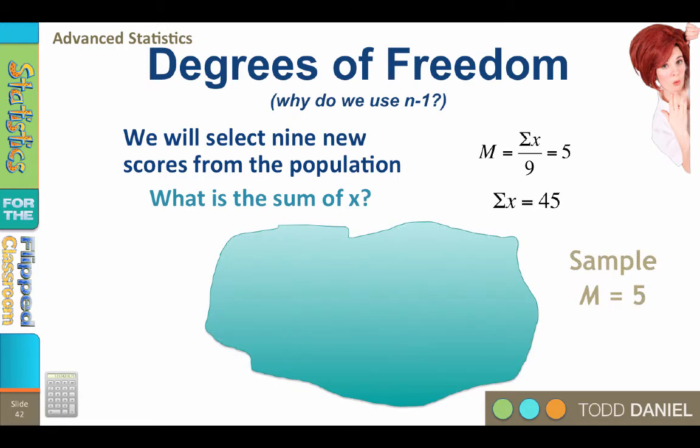It has to be 45, because 45 is the only number that can be divided by 9, our sample size, to equal the mean of 5. The values in the population can vary, but they must still average to the mean. We have chosen our nine people, and we know that their scores have to add up to 45 so that we get that mean of 5. Well, let's see what their scores were.